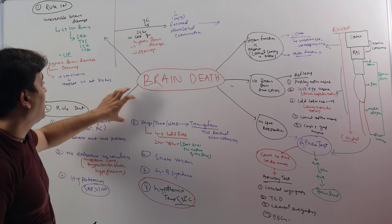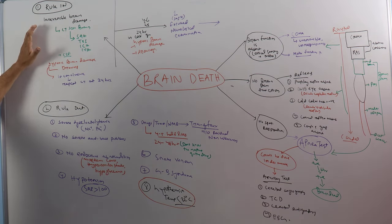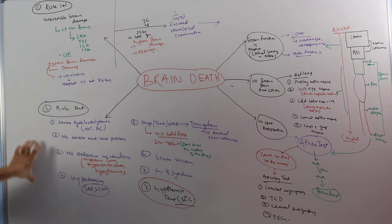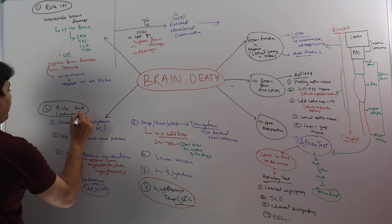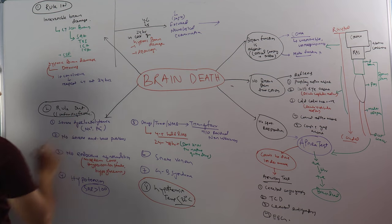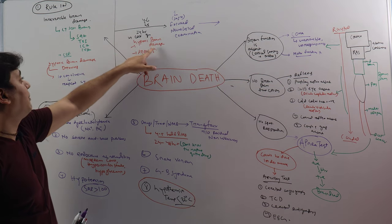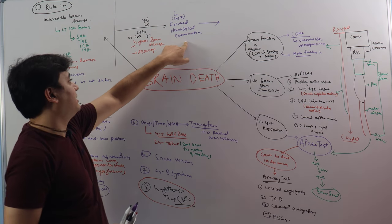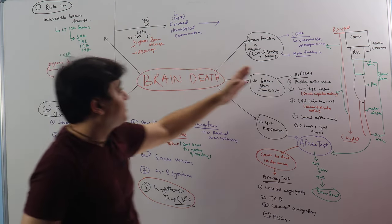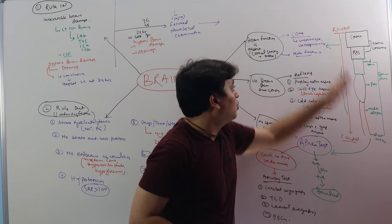In this way, we have to approach how to declare a patient brain dead. In the beginning, first rule in any process that can cause irreversible brain damage. Once you rule in, then you have to rule out the confounding factors. Once you have done with all these two parts, you have to wait for at least four to six hours, or in case of hypoxic brain damage or drowning, you have to wait for 24 hours. Then a single focused neurological examination is enough to declare a patient brain dead. This works from rostral to caudal, from the brain cortical system to the medulla oblongata to the respiratory center.